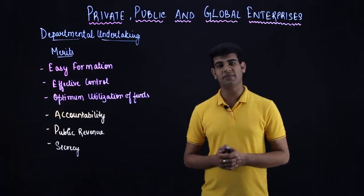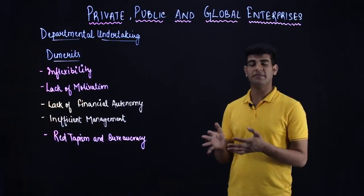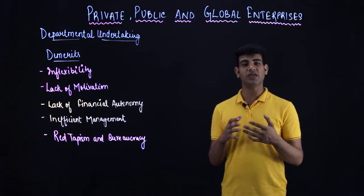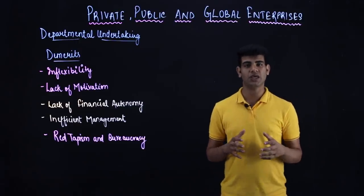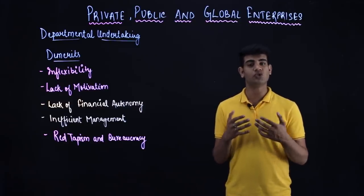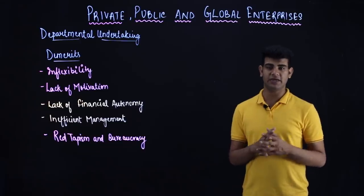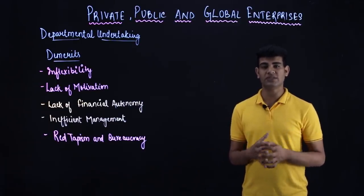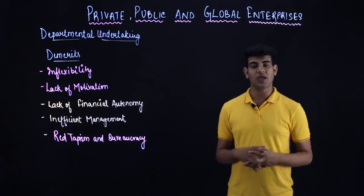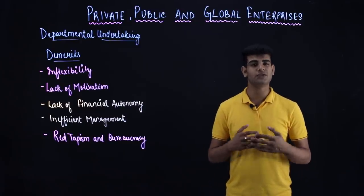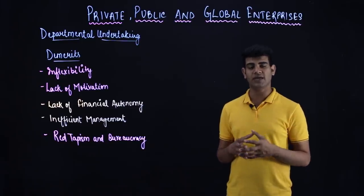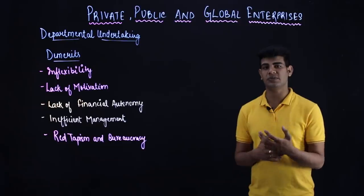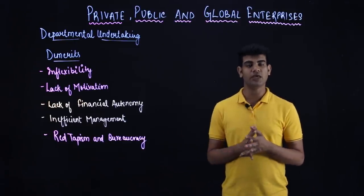Now we look at the demerits of departmental undertakings. First is inflexibility — because these undertakings are run through the government, major decision-making is in the hands of top government officials and ministers, so there is considerable inflexibility. Along with this, there is lack of motivation — employees and civil servants have a fixed job with a fixed salary, and if they work extra, they feel there's no benefit, because the extra money earned goes into the public treasury. So they have no motivation to work more.